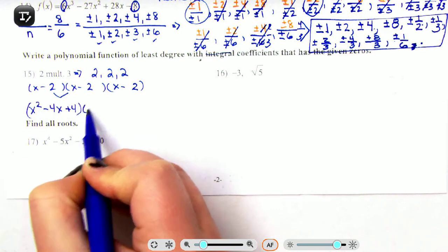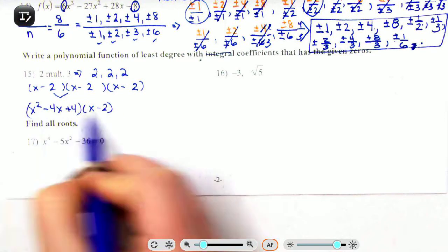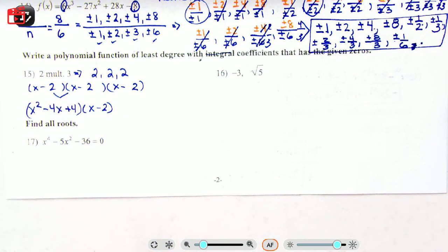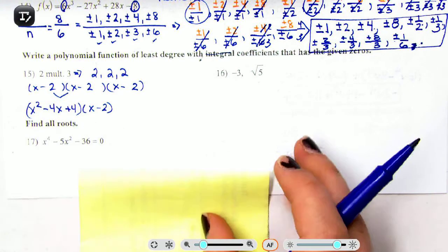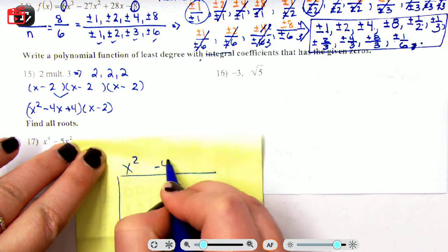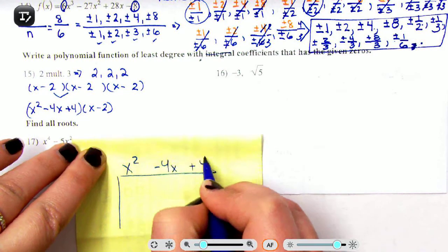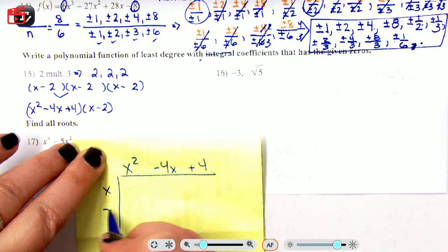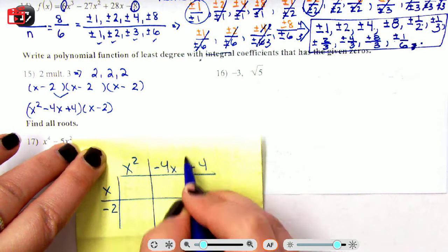Times (x - 2). That one I'm gonna use a separate sheet of paper to do a box method. Here I'm running out of room. x² - 4x + 4, here I have x - 2.